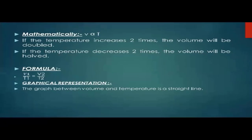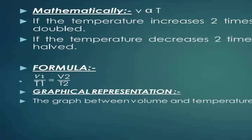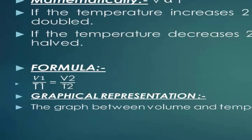We will see the mathematical representation between volume and temperature. Volume is directly proportional to temperature. If the temperature increases two times, the volume will double. If the temperature decreases two times, the volume will be half. The formula is V1/T1 = V2/T2, where V1 and V2 are volumes and T1 and T2 are temperatures of the two states.